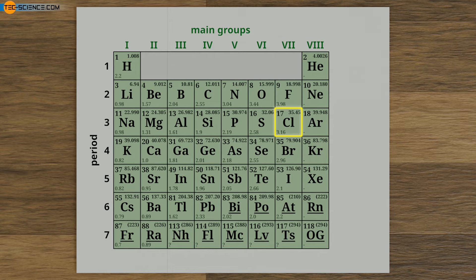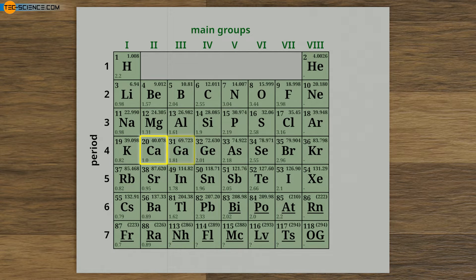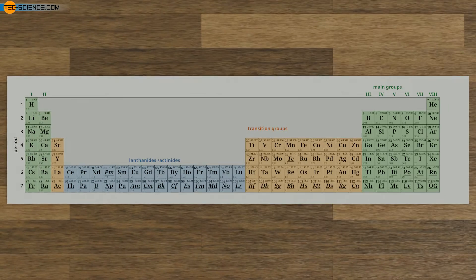To the right of chlorine is the element argon, with one more proton in its nucleus. With argon, the third period ends, and the fourth period begins with the element potassium — the atomic number has increased again by 1. Note that the atomic number between calcium and gallium appears to increase by 11 in the simplified figure, but this is only because the transition group elements are hidden. If we include these elements, the proton number still increases by 1 within each period.